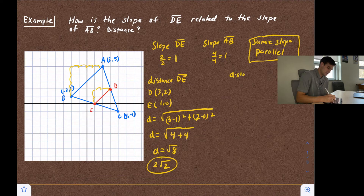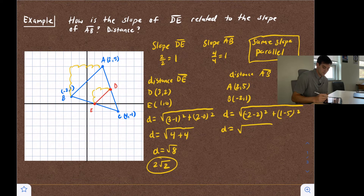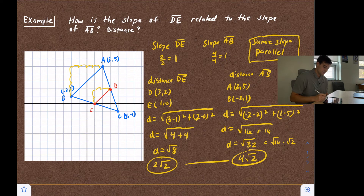Now let's find the distance of segment AB. Point A is at (2, 5) and point B is at (-2, 1). Using the distance formula: the square root of (-2 minus 2) squared plus (1 minus 5) squared. That gives us the square root of 16 plus 16, which is the square root of 32. Simplifying: the square root of 16 times the square root of 2 gives us four root two. Comparing our distances, two root two and four root two, the mid-segment is half of the side that it is opposite of.